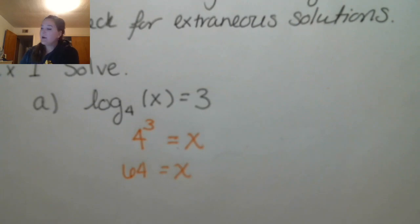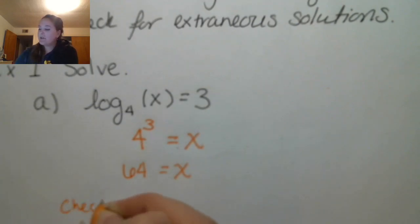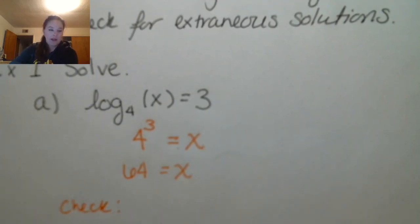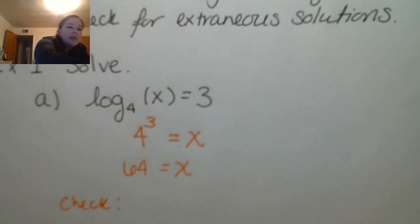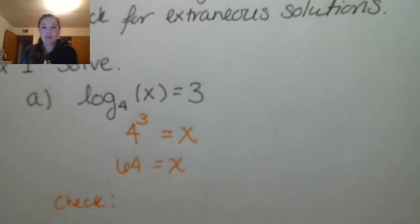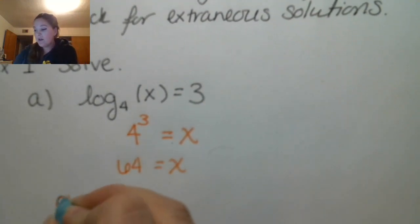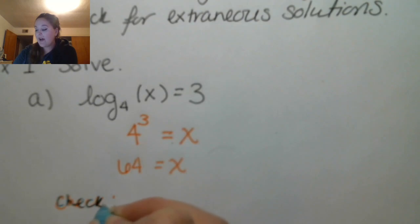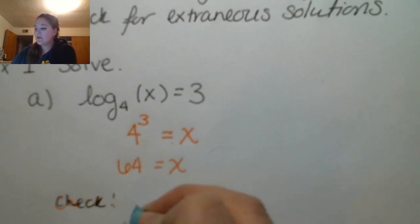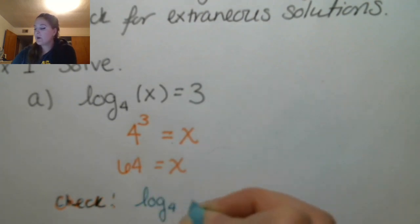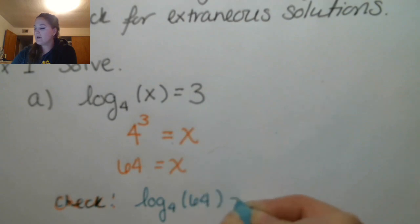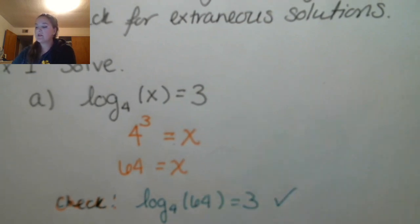Now I'm going to go ahead and check my answer. I'm checking for extraneous solutions — I'm not checking for mistakes, although it will help me discover if I have a mistake. So I would have log base 4 of 64 is equal to 3, and that's true.